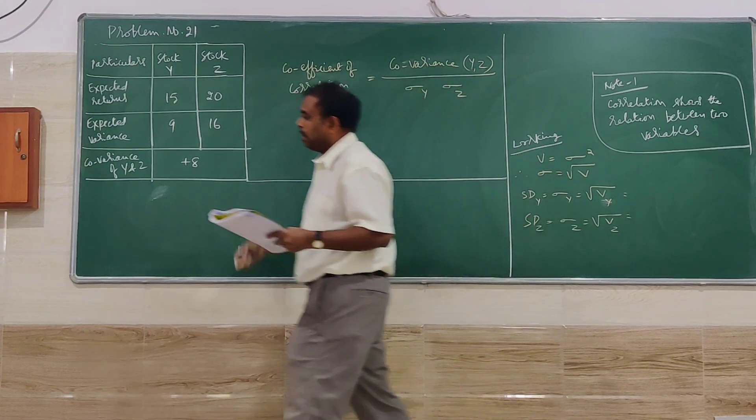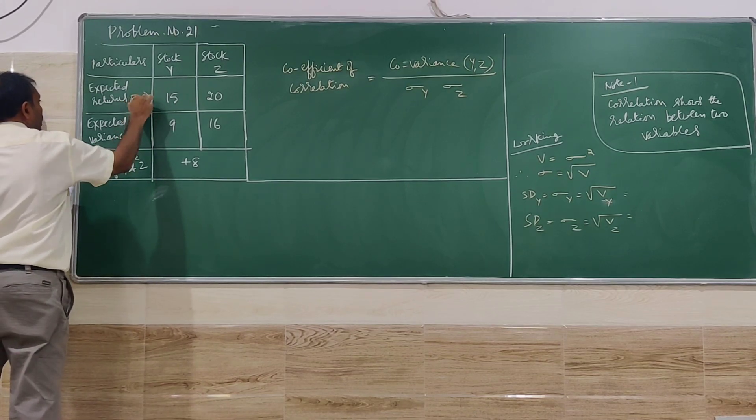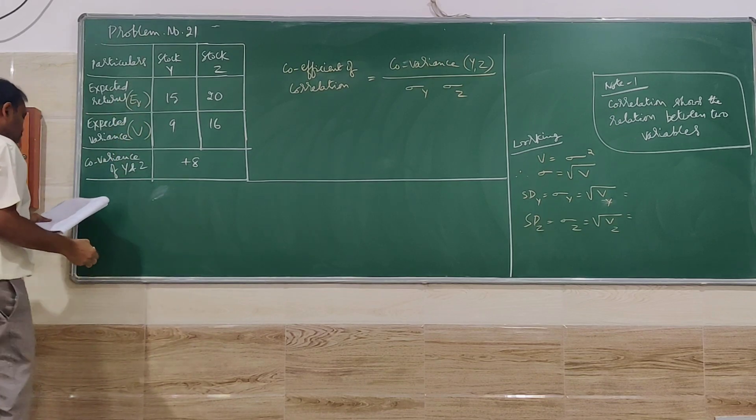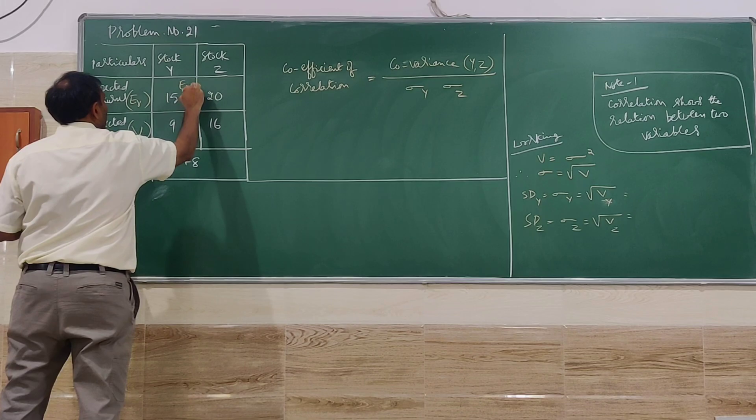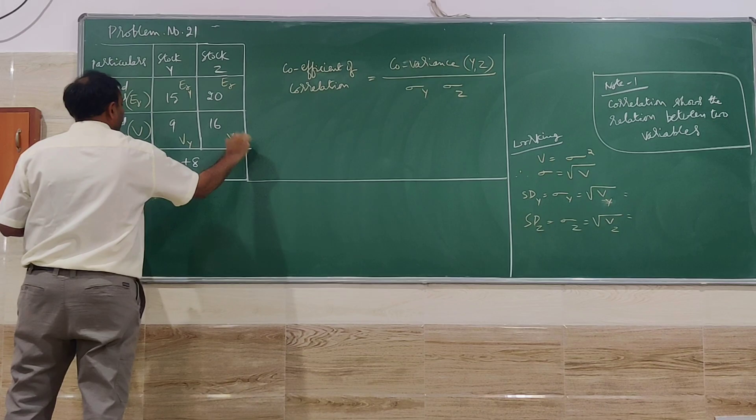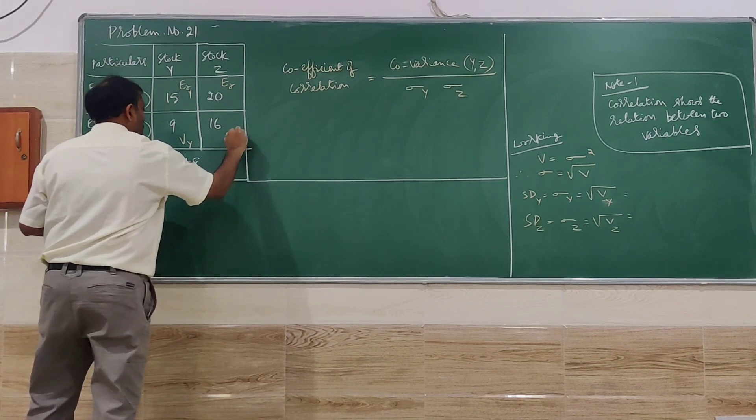So let me go for denoting this. Expected return is ER. Variance is V. So if it is so, this 15 is going to be ER of Y, ER of Z, VY, VZ.